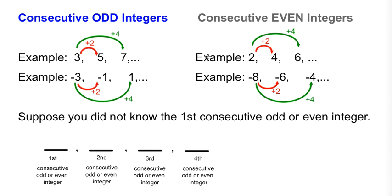Let's go ahead and talk about consecutive even integers. Here are two examples. 2, 4, 6, so on and so forth. And negative 8, negative 6, and negative 4, so on and so forth.